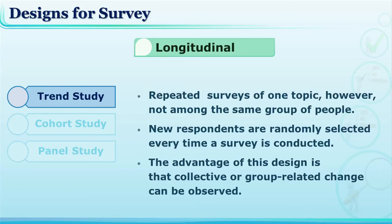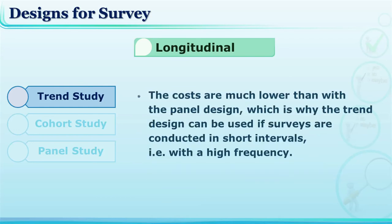Unlike the other two types of longitudinal survey, trend survey does not depend on the same sample. It selects a different group at different times in the timeline, and a particular trait or variable is studied for that group over a period of time. Since it does not need to locate the same people repeatedly, the cost of a trend survey is comparatively lower than the cost of panel surveys.